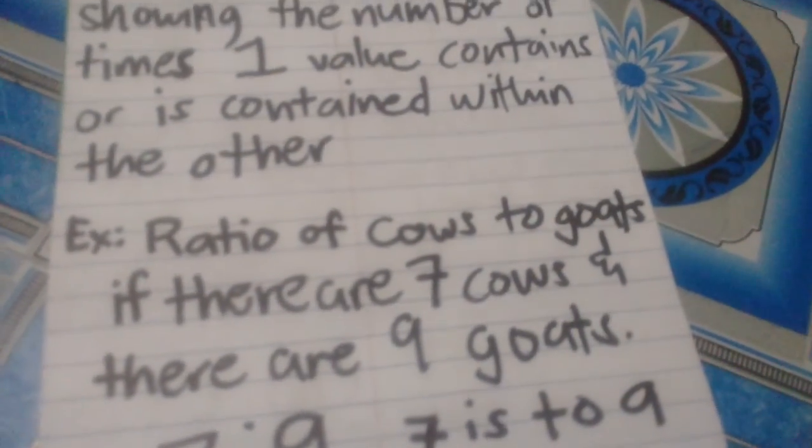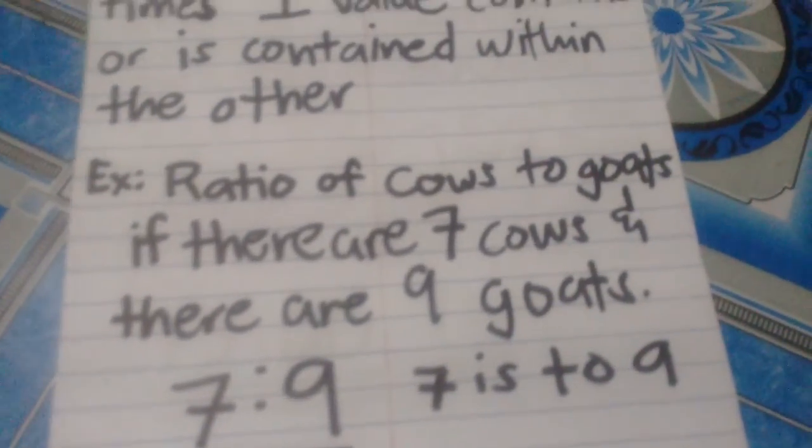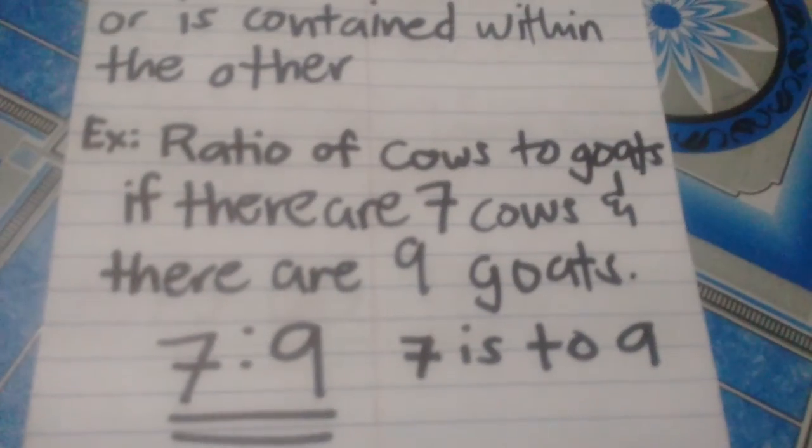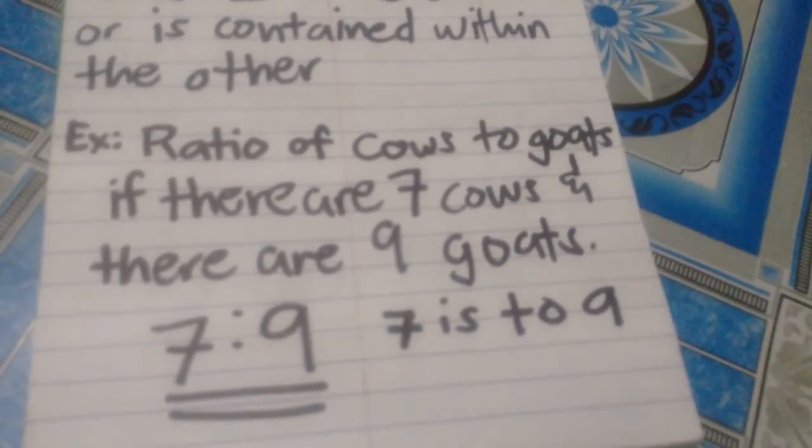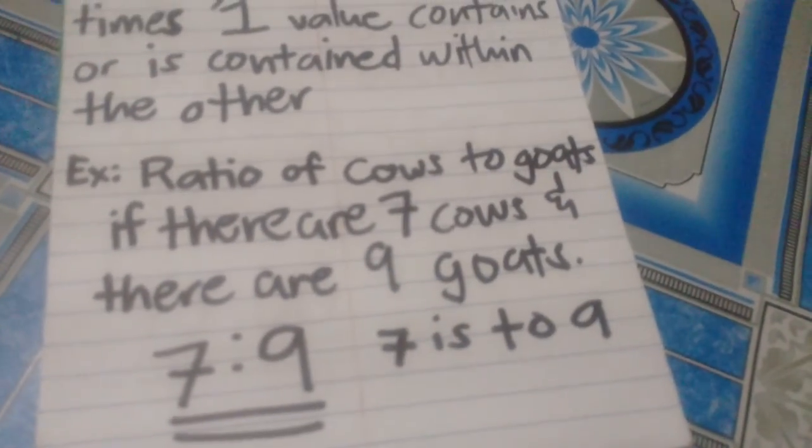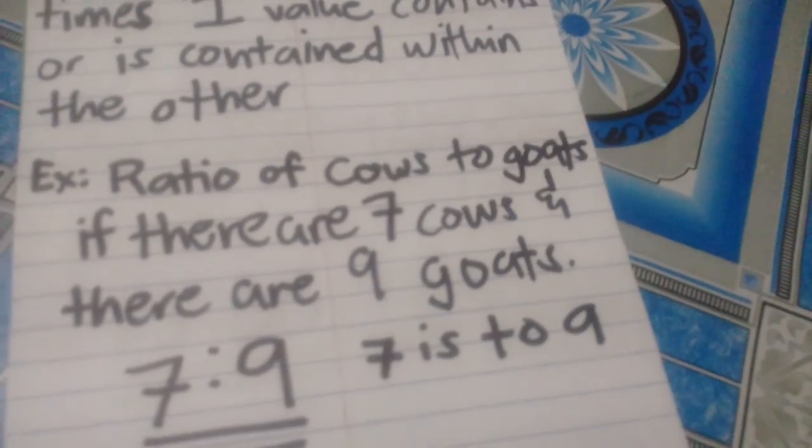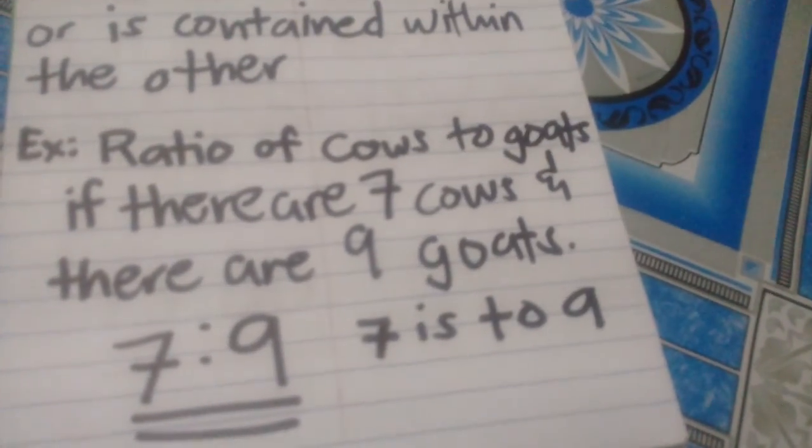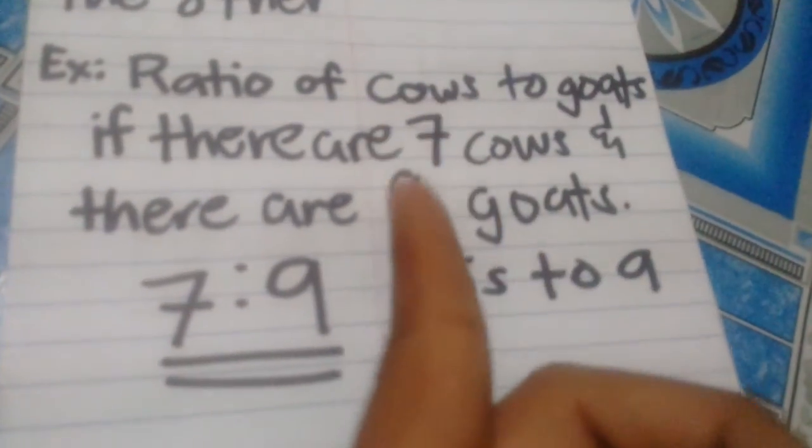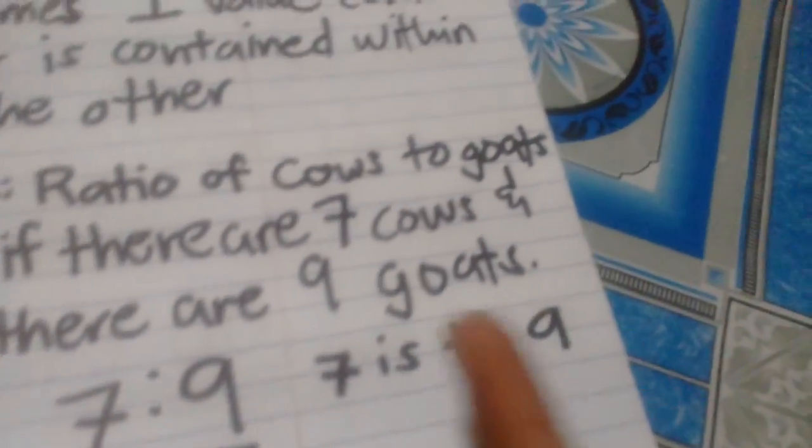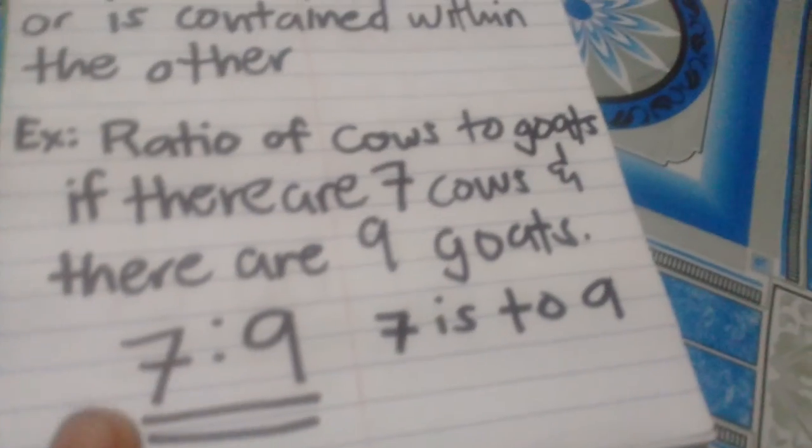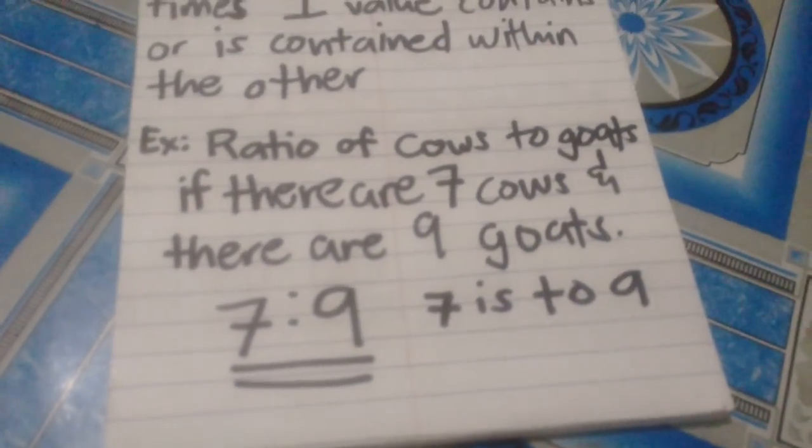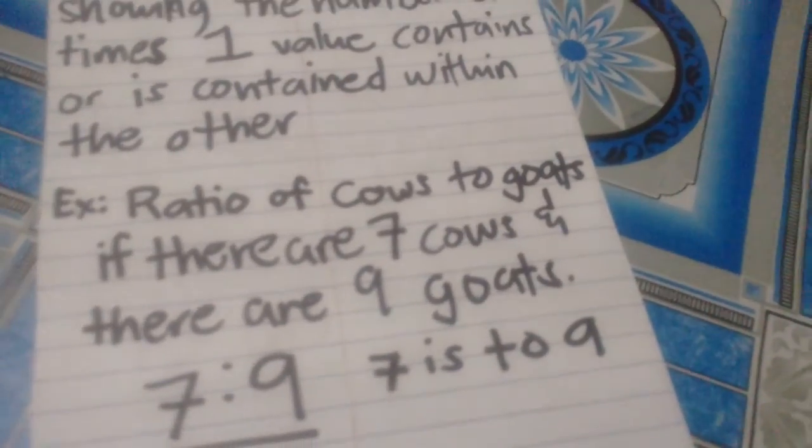The first problem: ratio of cows to goats. If there are 7 cows and 9 goats, the first name mentioned is cows and the second is goats. What is mentioned first should be written first, so we write 7 for cows and 9 for goats. This is read as 7 is to 9, meaning that for every 7 cows, there will be 9 goats.